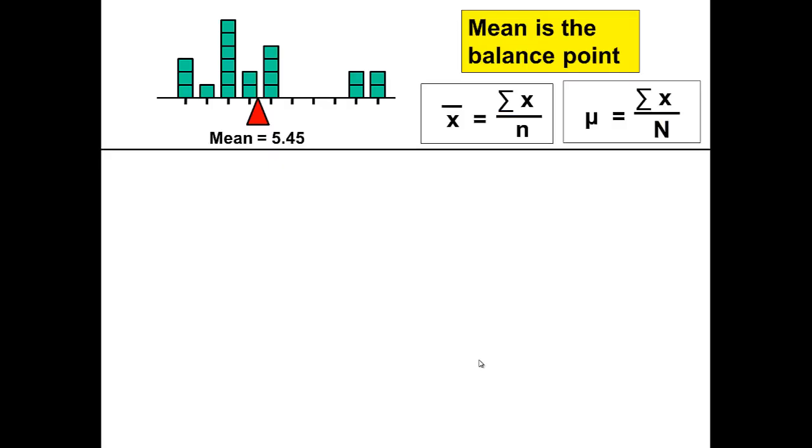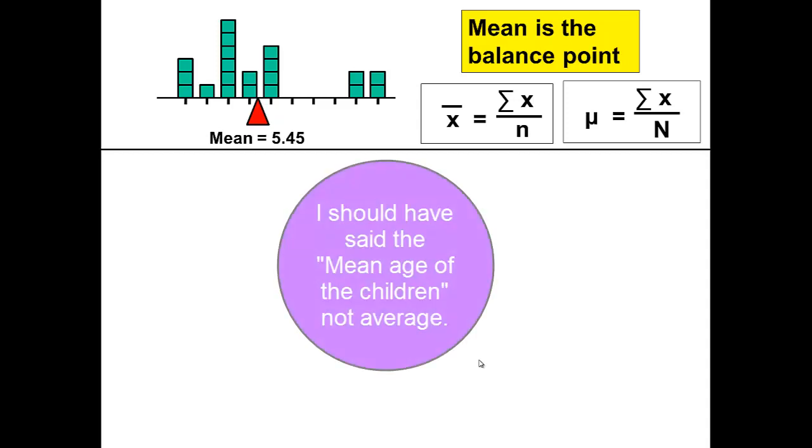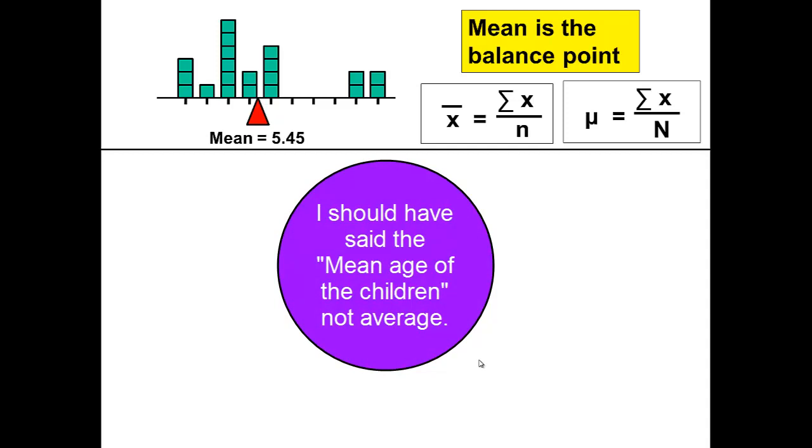Mean. The mean is the balance point. Remember our two formulas, and our mean from the previous video was 5.45. Relating this to the daycare center and the ages of the children, we could say that the average age of the children at the daycare center is 5.45 years old.